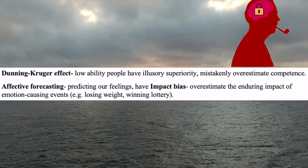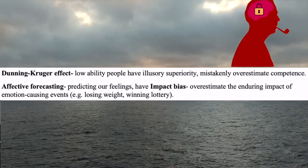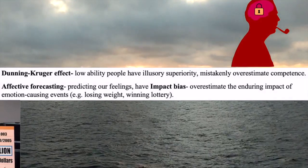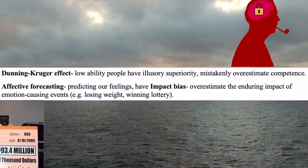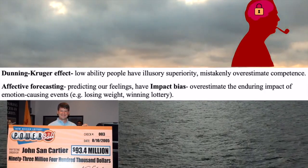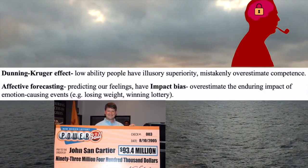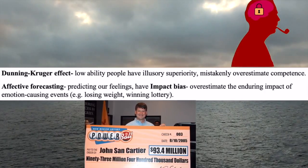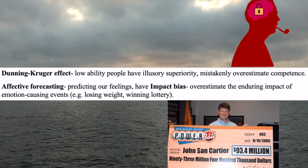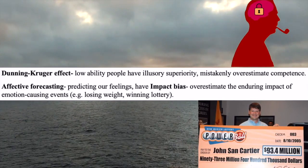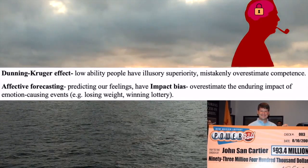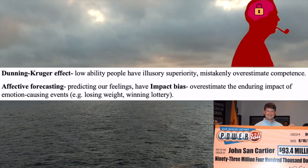Affective forecasting is when individuals predict feelings, and this has an impact bias — defined as the overestimating of the enduring impact of an emotion-causing event. For example, predicting how happy we would feel if we won the lottery, lost weight, or got our dream job. This produces impact bias because we overestimate the impact of the significant event, when in reality, once you get the very thing you wanted, individuals usually don't live up to that expectation.